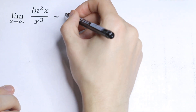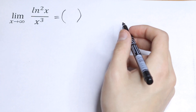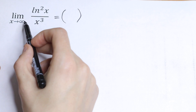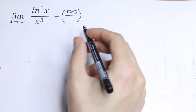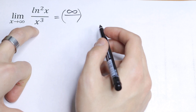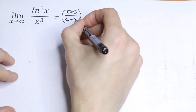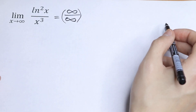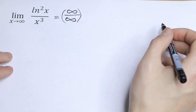Let's use direct substitution first — I recommend you use direct substitution every time, and we will see what happens. In our numerator, if x approaches infinity, we have infinity. And in our denominator, x cubed also goes to infinity. So we have infinity over infinity — an indeterminate form. We need to simplify this using a trick.